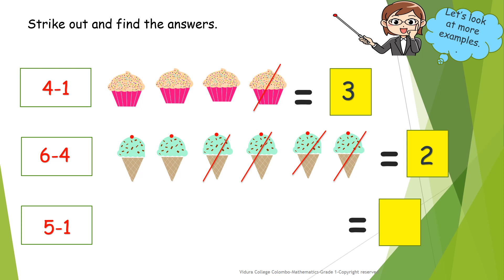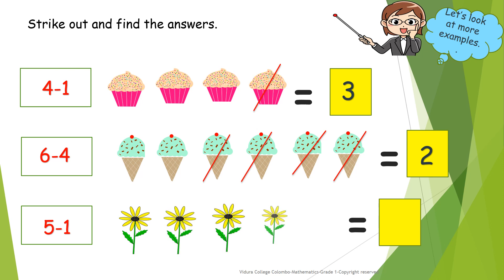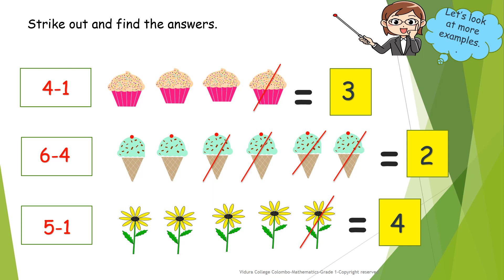Let's look at the last one. How many flowers are there? One, two, three, four, five. Five minus one. So, we should strike out one out of five. We'll strike out one flower. Let's count the remaining flowers. One, two, three, four. So, the answer is four. Five minus one equals to four.